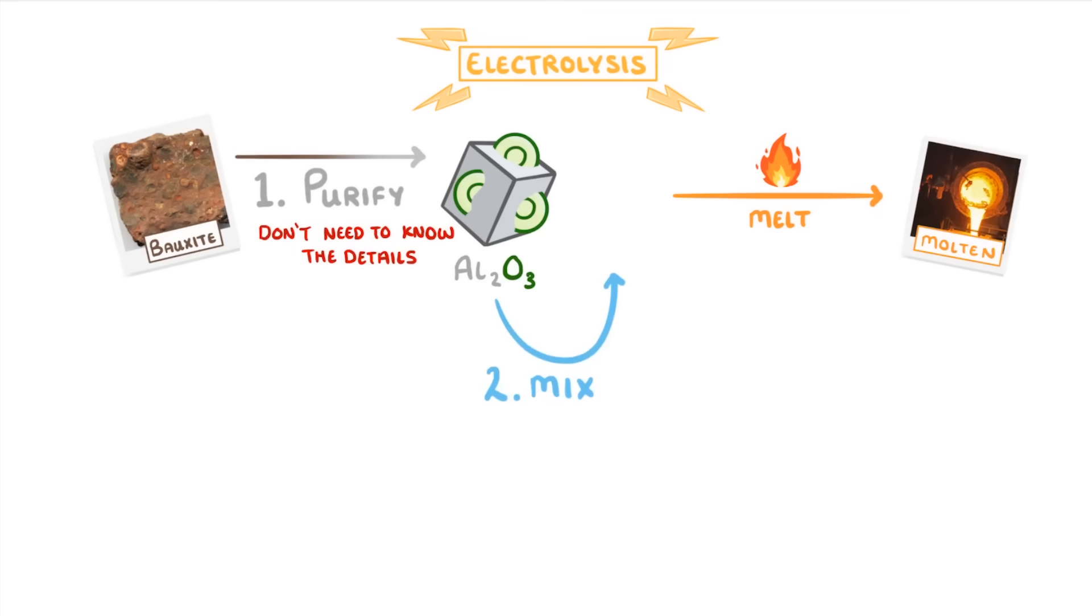So we first mix the aluminium oxide with a mineral called cryolite, which lowers the melting point. Even so, it still requires really high temperatures, and so loads of energy.